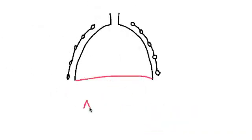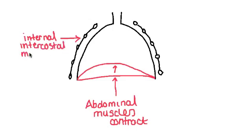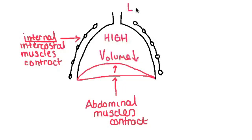It is also possible to force this process of expiration by contracting the abdominal muscles, which will push the diaphragm up. You can also contract the internal intercostal muscles pulling the ribs down. Both of these things will decrease the volume, increase the pressure as shown in the diagram, and force the air out.